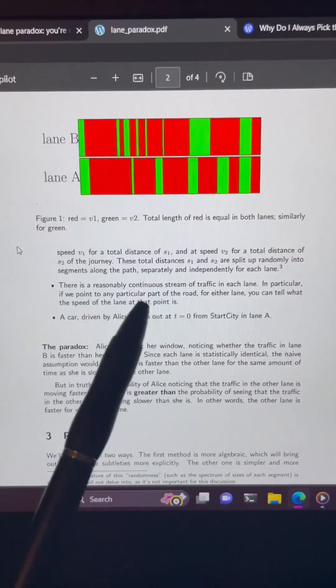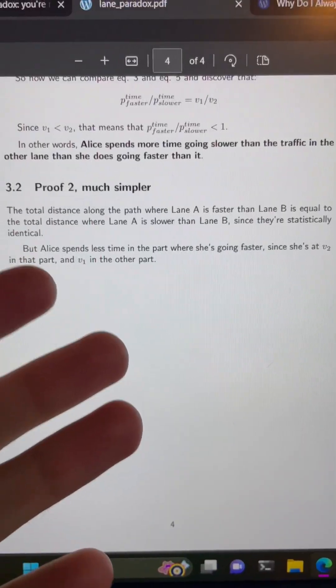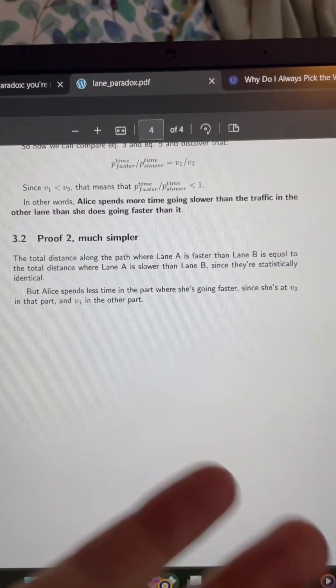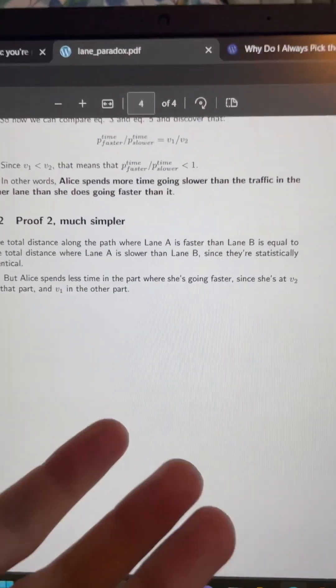In fact, there is a greater chance that the lane that you are looking at is faster than your lane, because if you are in the slower lane looking at the faster lane, since you're moving slower, you're spending more time there. But if you were in the faster lane, you wouldn't be spending as much time in it.